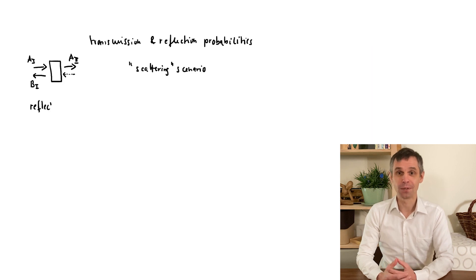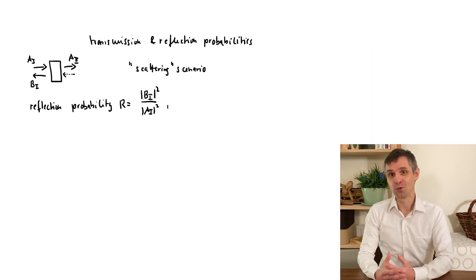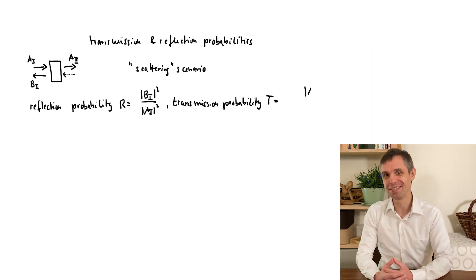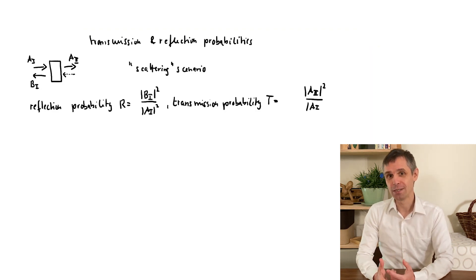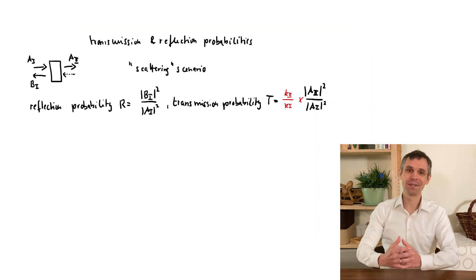Now, we already talked about the reflection probability, and this is indeed simply given by the ratio of the intensities of the incoming and outgoing wave components on the side of the source at the left. But when it comes to transmission, we need to take care of this one technical detail, namely that the two regions could have a different potential energy. So the particle is moving there with a different velocity. And we need to then include a factor into our definition of the transmission probability to take care of this.